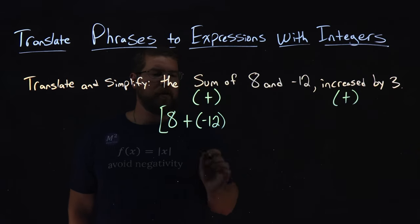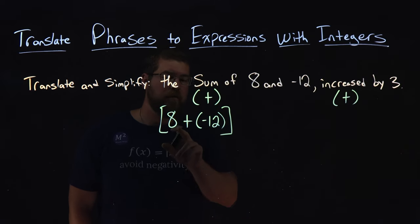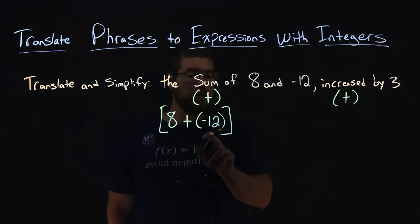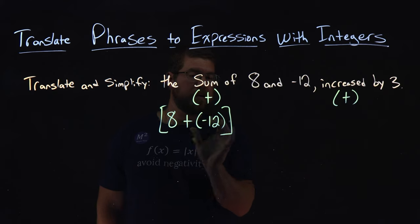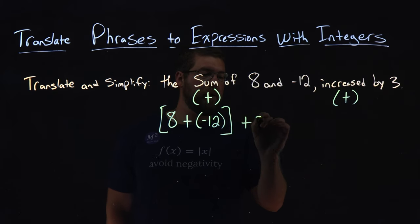So I'm going to block off here 8 and negative 12 with brackets. So we have 8 and negative 12 right here, added together in brackets. Then we're increasing by 3.